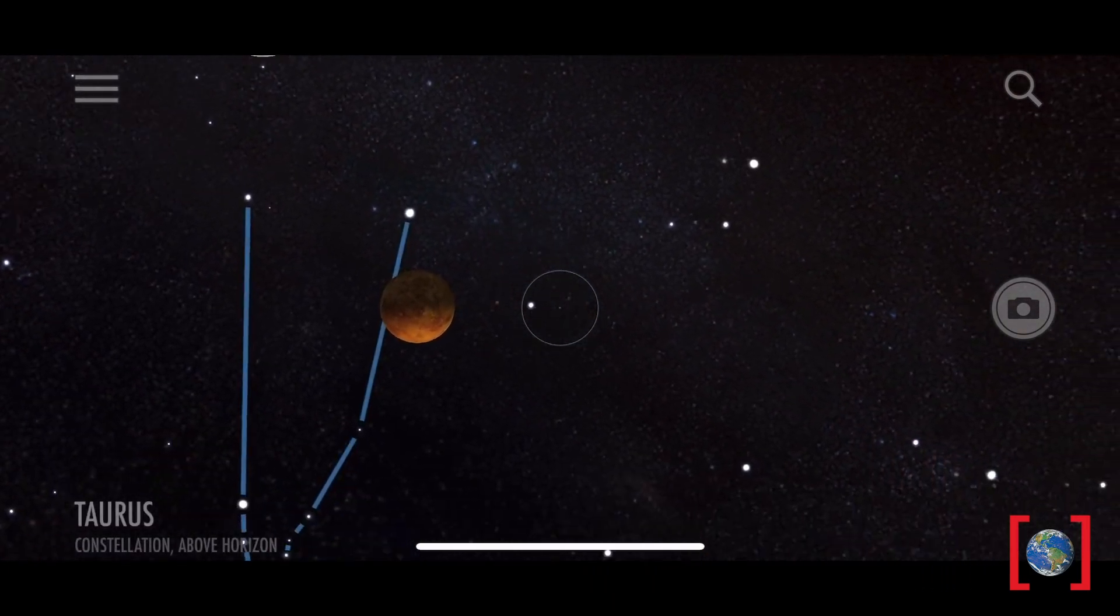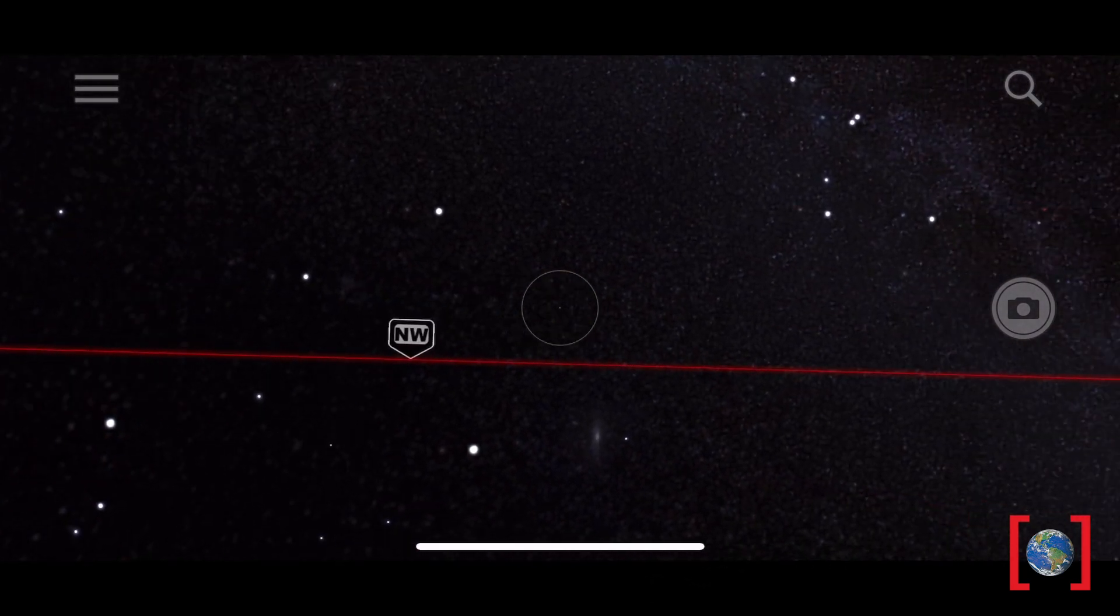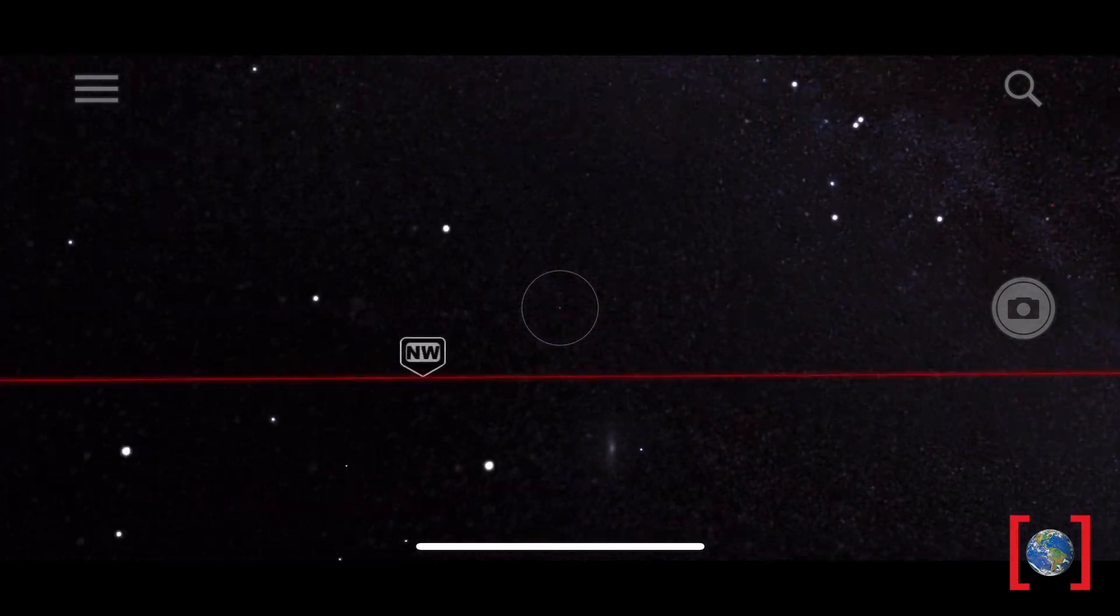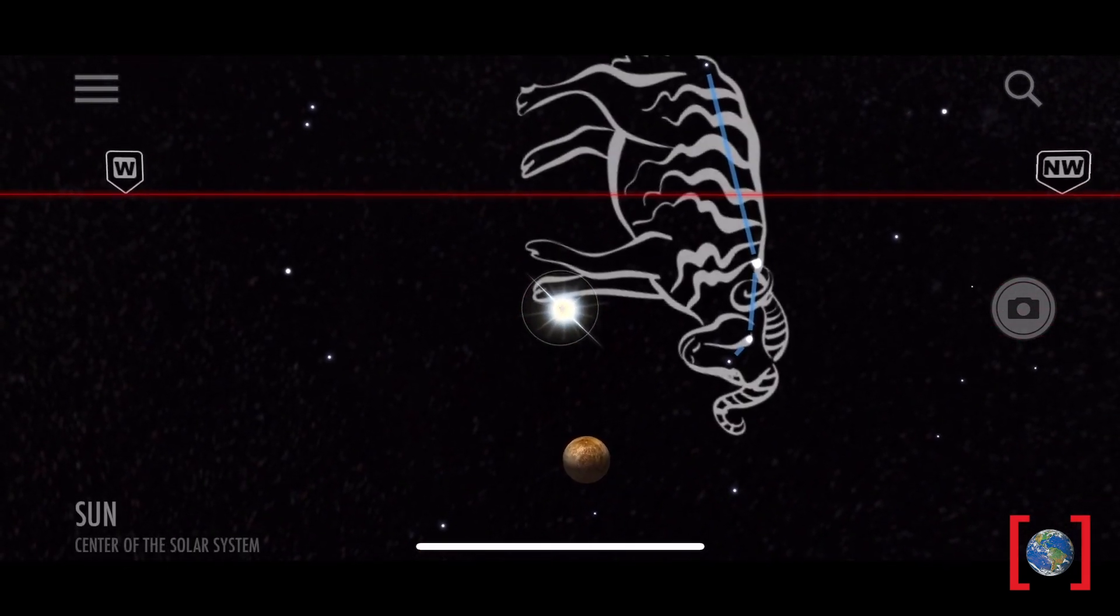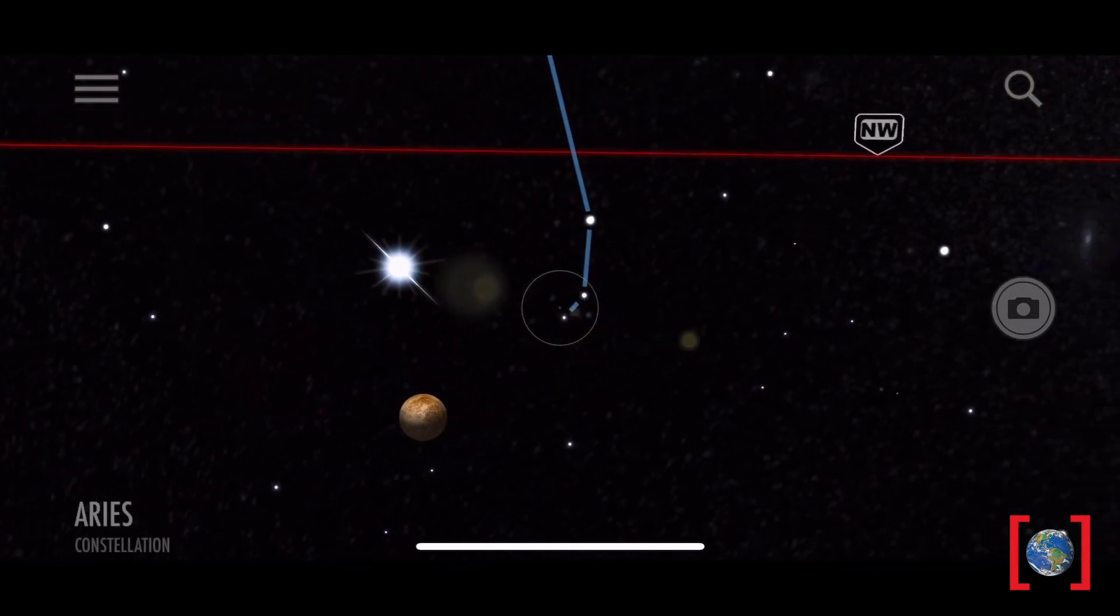What else can we spot? Let's keep going around the horizon. Oh, actually, there's our sun. Our sun is already below the horizon, along with Mercury, because they've already set for the day.